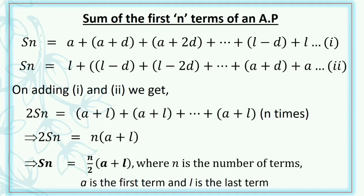Where n is the number of terms, a is the first term, and l is the last term. So if n, a and l are given, we can find out the sum of those terms using this formula: Sn = (n/2)(a+l).